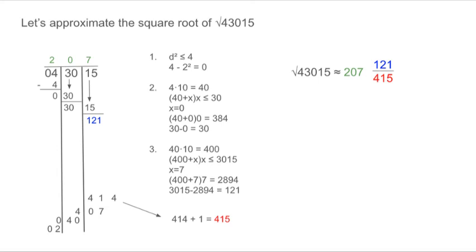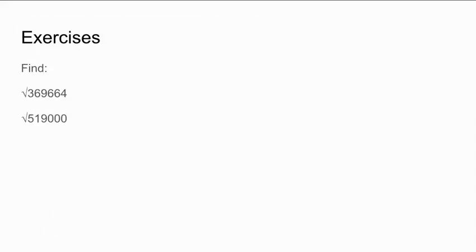Now try some examples on your own. Using Al-Kashi's method, find the approximate square root of 369,664 and 519,000.